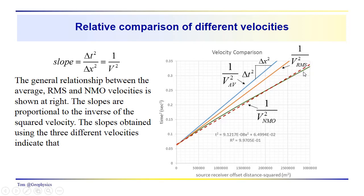If we had calculated it for the longer offsets, just taken a tangent to this line here, the VNMO would have been larger than the VRMS that we get over here. So something to keep in mind. But we have a relative comparison of the slopes from these three different methods, and what we found out is that the average velocity is less than the RMS velocity is less than the VNMO velocity.